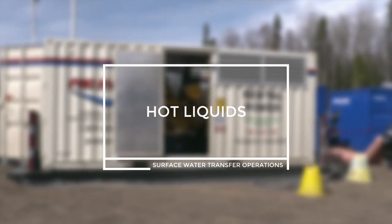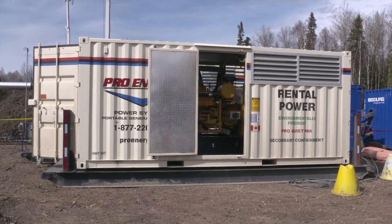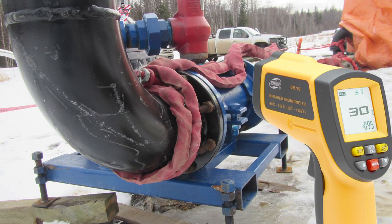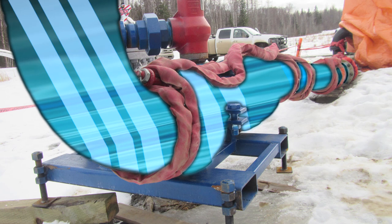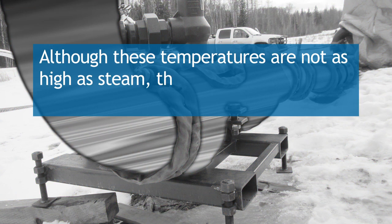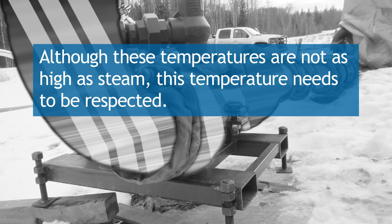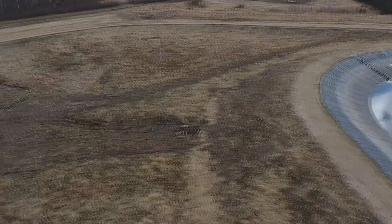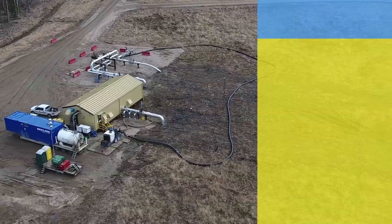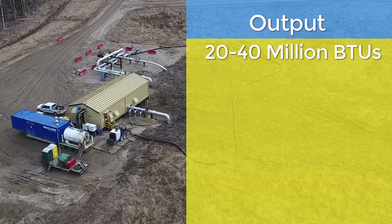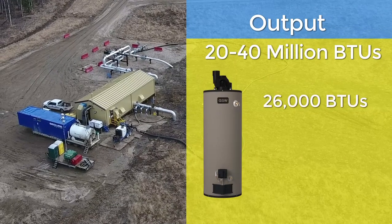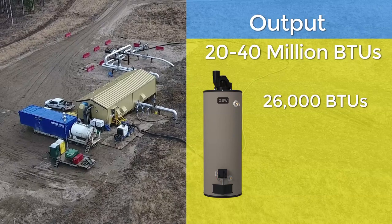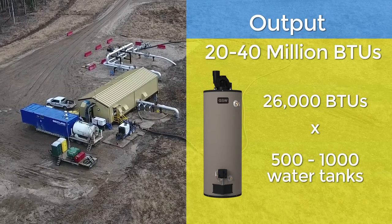Hot liquids. Typically, the heaters used in these operations only need to reach a temperature of 30 degrees Celsius or 85 degrees Fahrenheit. The fluid only needs to be hot enough to not freeze on the way to the staging area or the next heater location. Although these temperatures are not as high as steam, this temperature needs to be respected. Due to the large volumes of water, the energy output of these heaters is significant. Output can be in the range of 20 to 40 million BTUs. To put that into perspective, a household water tank is generally 26,000 BTUs. These units are the equivalent of 500 to 1,000 household water tanks.